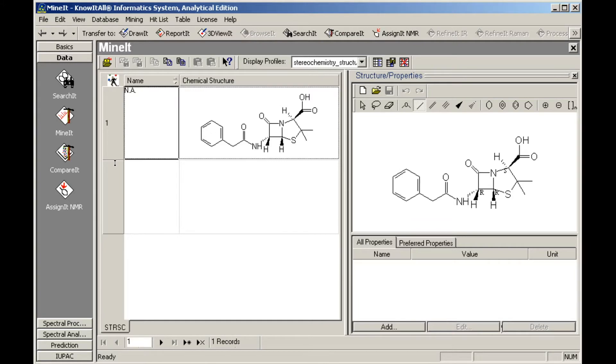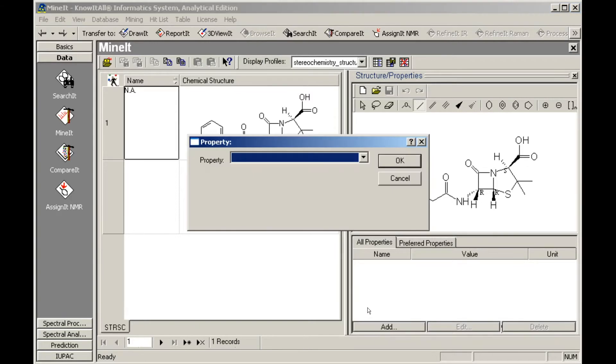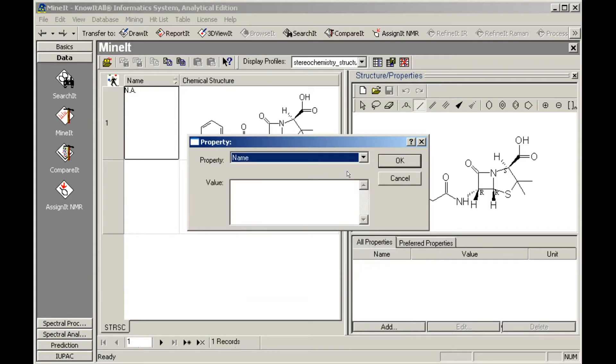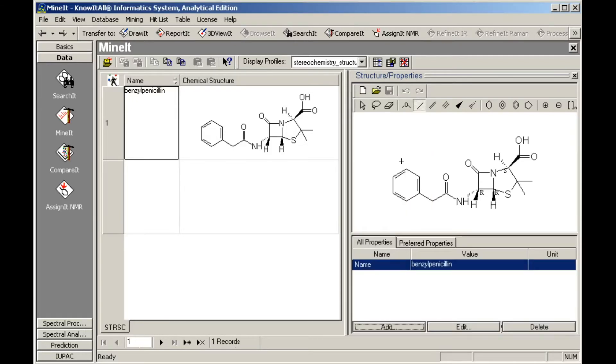We can now add properties to the database entry. Click Add in the Structure Properties pane. All available properties are listed. Select the property you wish to display, type in the value, then click OK. The property is displayed in the Structure Properties table. Continue adding properties as desired.